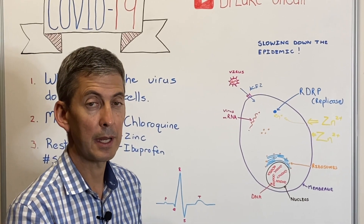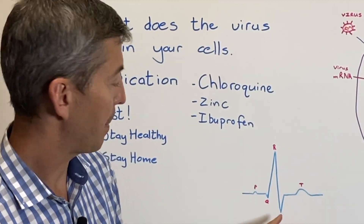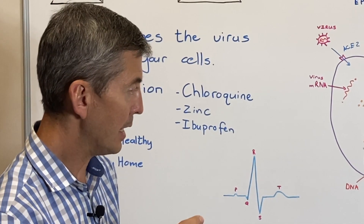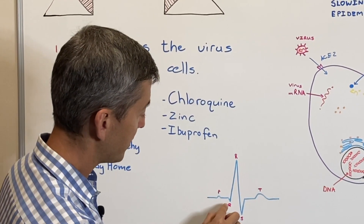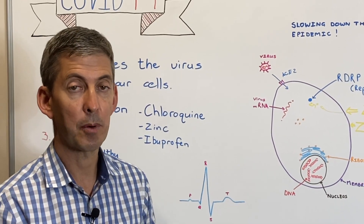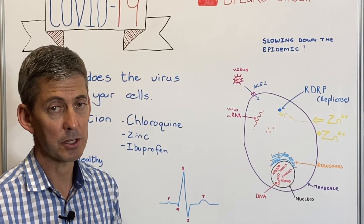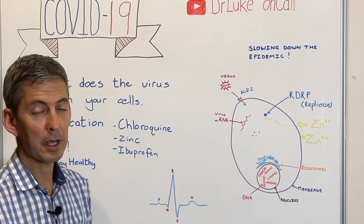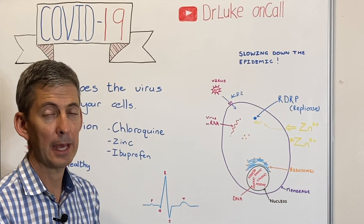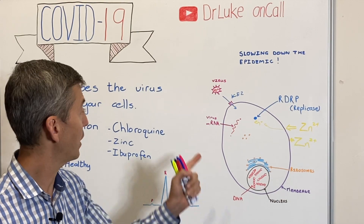Now, talking about chloroquine side effects: this structure I drew is a QRS complex — that is a heartbeat, that's how a heartbeat looks on an ECG. The problem with chloroquine is that it lengthens the QT time on your QRS complex, and if it lengthens it, it can cause cardiac problems — arrhythmias — which is not a good thing and can be dangerous. There's been a recommendation to give chloroquine with Zithromax, a type of antibiotic, but both can lengthen the QT time. It needs to be given with caution by a doctor and is definitely not for everyone.